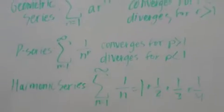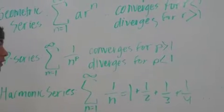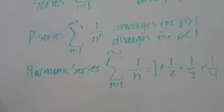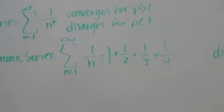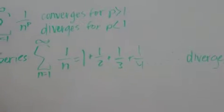Next series is p-series, which is 1 over n raised to a variable. If that variable is greater than 1, it converges. If it's less than 1, it diverges. Next is harmonic series, which is just one simple series. 1 over n expands out like this, and it's always going to diverge.